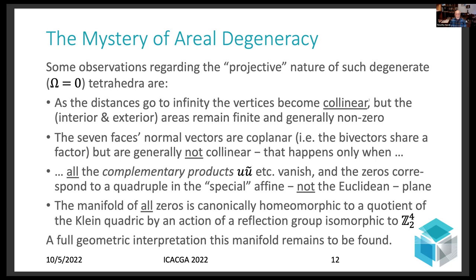Finally, you can show that the manifold of all the zeros is a 5D manifold, which is canonically homeomorphic to a quotient of the famous Klein quadric by an action of a reflection group, which is isomorphic to the cyclic group of order two direct product with itself four times. And you can show that via the factorization I mentioned of the polynomial omega in terms of the square roots of the natural parameters. The geometric interpretation, though, remains to be found in ordinary conditions.